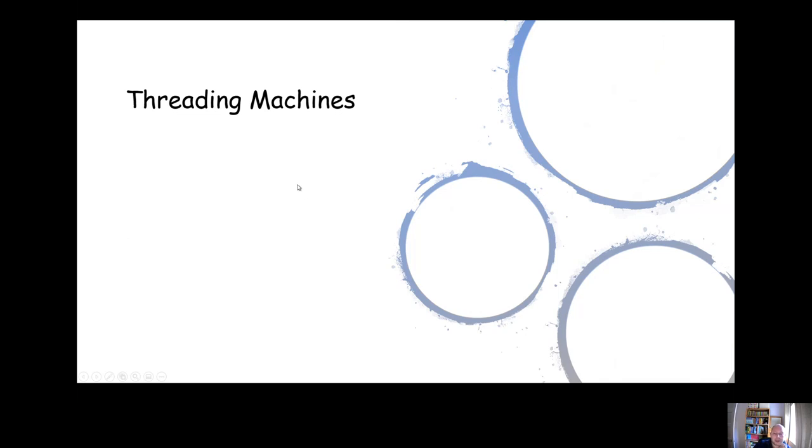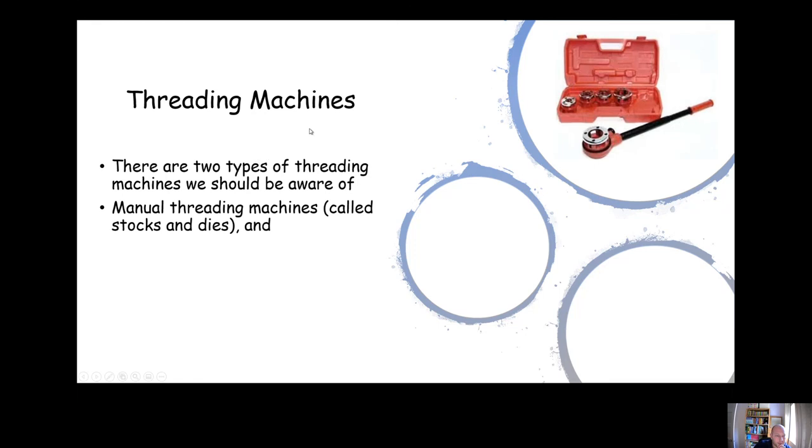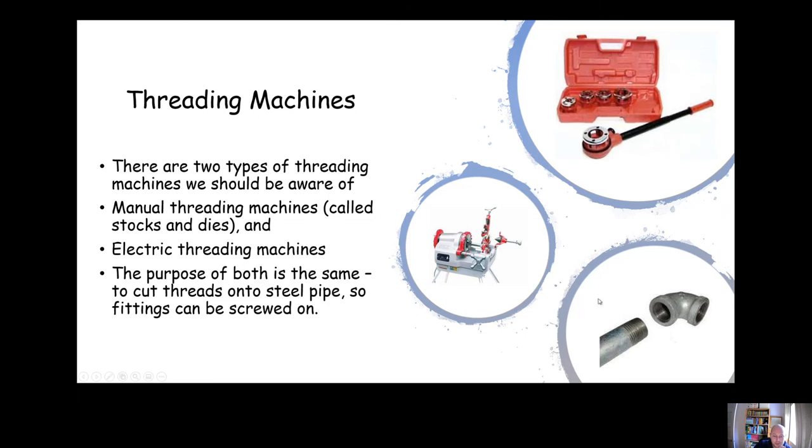Threading machines - going back to steel pipe, we will need to put threads onto the pipe. There's two different types. One is stocks and dies which are these ones here up in the top right. They're the ones that you guys are going to use in the workshop. But you also might come across electric threading machines as well, very useful bit of kit, really speeds up the job if you're working with steel pipe on the site. The purpose of both is the same - it's to cut the threads on the steel pipe which would allow a threaded fitting to be screwed onto the end of it. You need to use PTFE which we're going to chat about later on in this session.